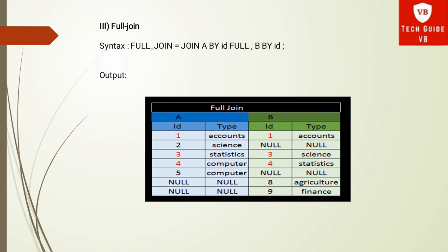The next point is the full join. When we want to get all matched and unmatched records from both data sets, we use a full join. See the syntax: full_join = JOIN a BY id FULL, b BY id; — in the output, all data from both the left and right data sets will appear in the results.